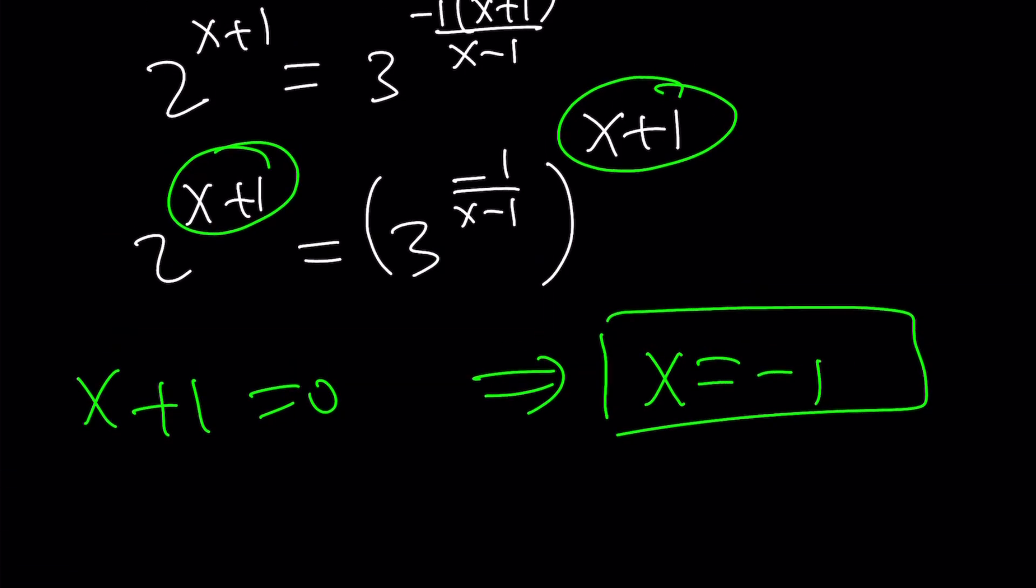And the other solution just comes from here. 3 to the power negative 1 over x minus 1 equals 2. If you solve for x, guess what you get? Log 2 minus log 3 over log 2 as before.